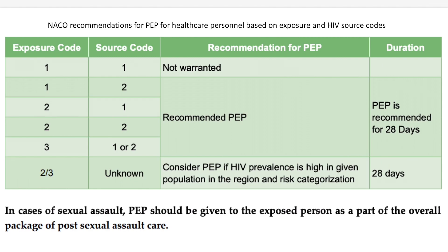In developed nations, irrespective of the exposure code and source code, most interns complete the 28 days of post-exposure prophylaxis because you cannot take chances. In resource-poor settings, these algorithms work. If there are no drug availability issues or financial constraints, it is better to complete the PEP course, as it doesn't harm unless there are adverse drug effects. In any case of sexual assault, PEP should be given immediately — you do not wait for the HIV status of the accused.